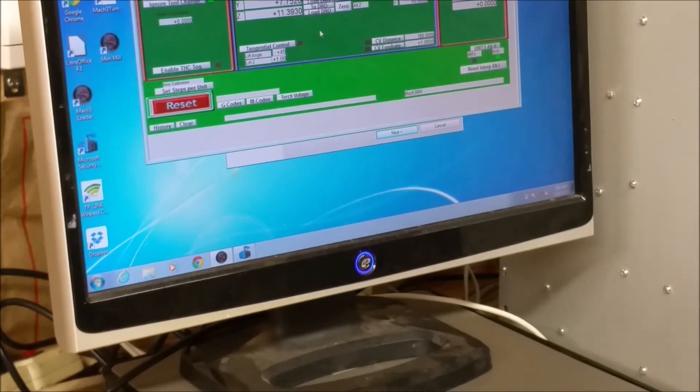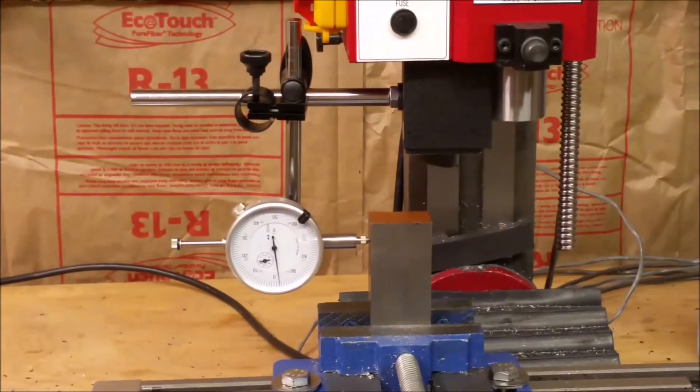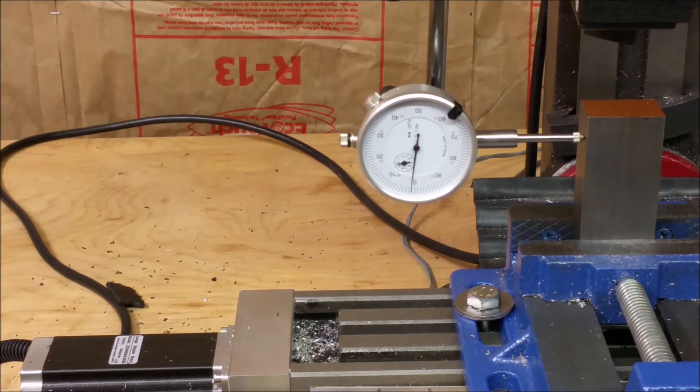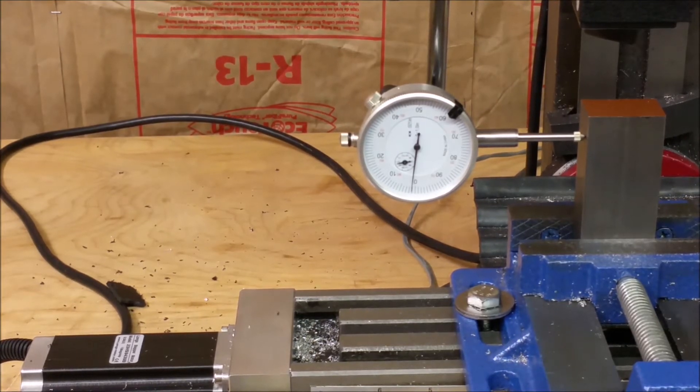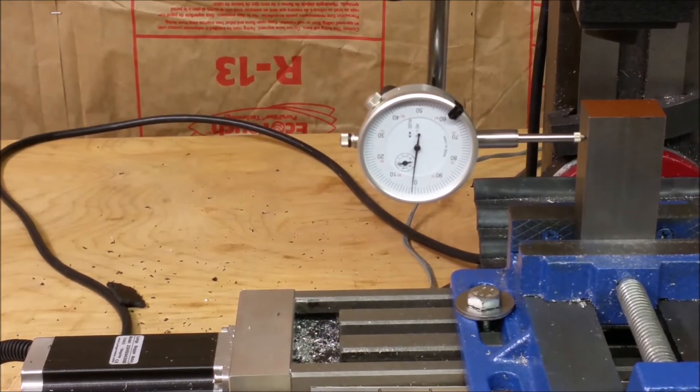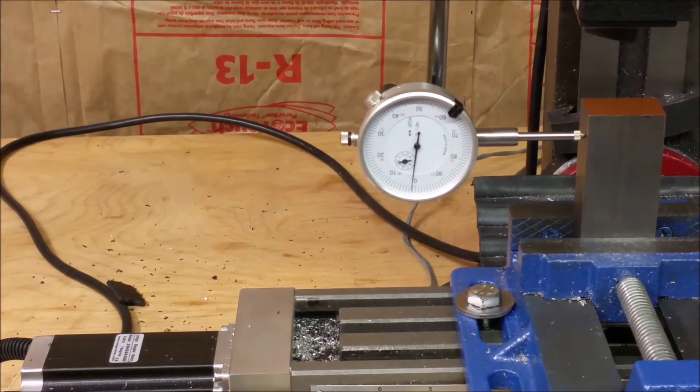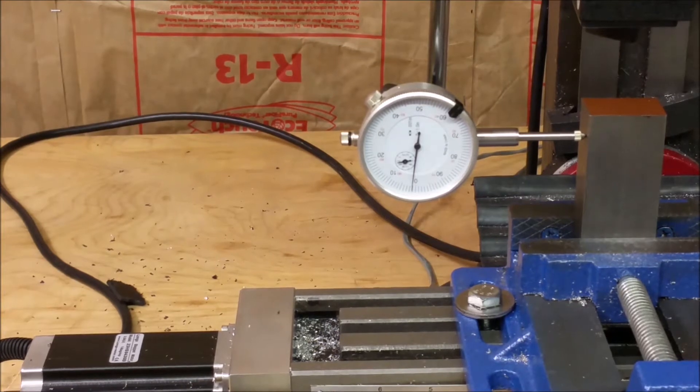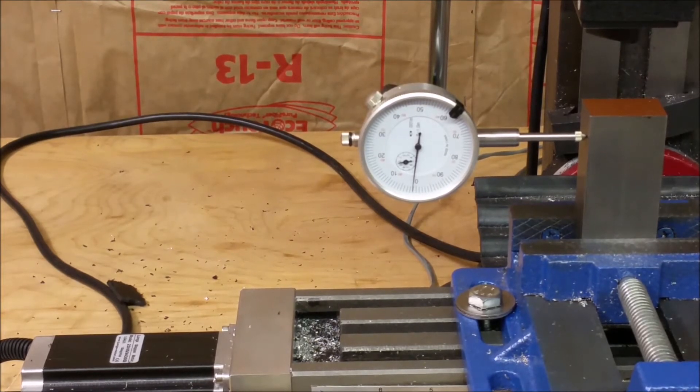And now we're going to confirm it by doing the same thing again. Okay, I set it up again. I touched off and I'm about a hair over a thou, maybe a thou and two tenths or something like that. So I'm going to go into Mach 3 and go into settings again and set steps per unit, x-axis. Click OK.